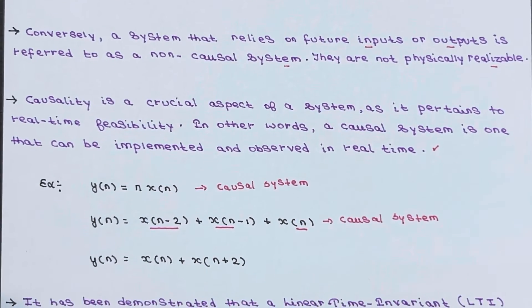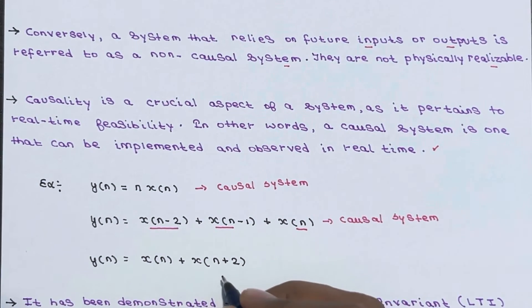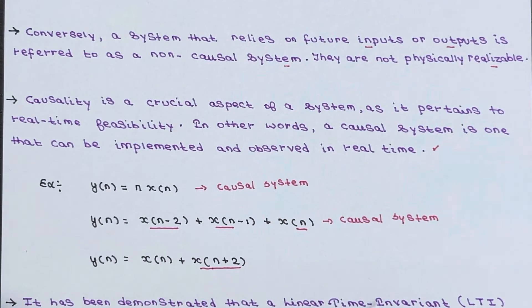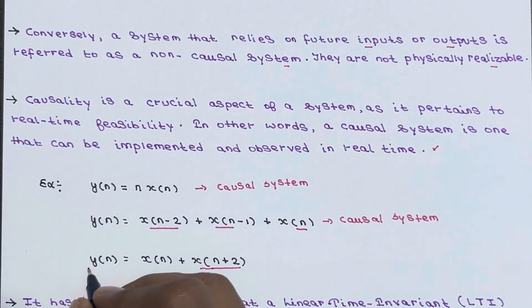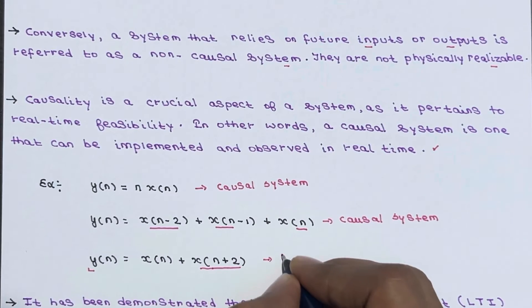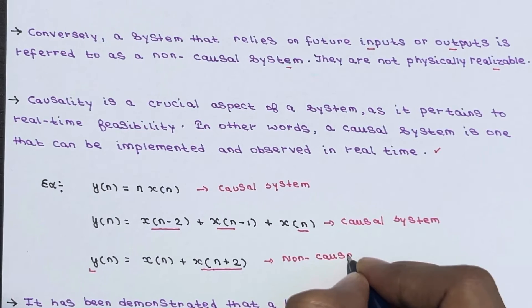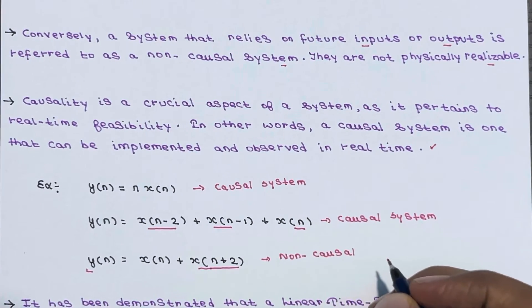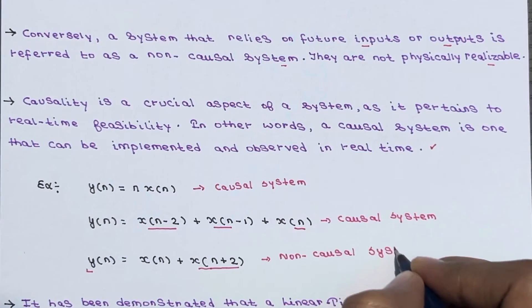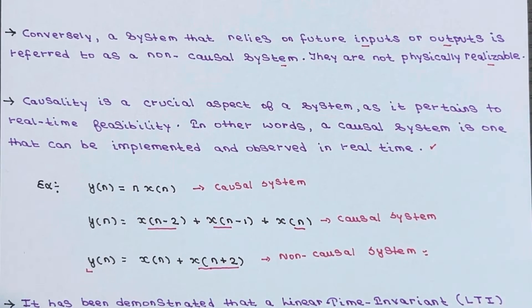Now: y of n equals x of n plus x of n plus 2. Here x of n plus 2 is a future input. Since the system output is dependent on a future input, this is a non-causal system.